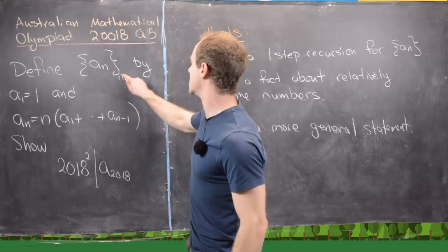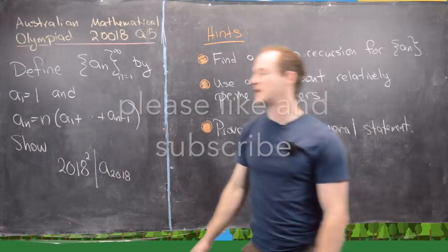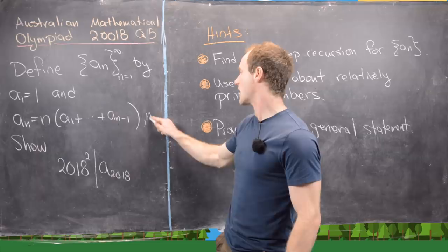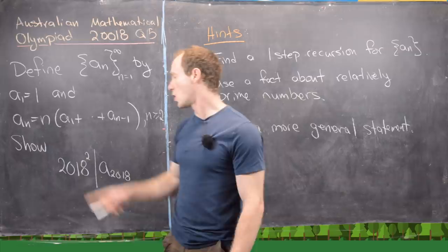So we want to define this sequence of numbers a_n and I should say this starts at n equals zero to infinity by this recursion. So we have a_1 equals one and then a_n equals n times the quantity a_1 plus a_2 plus a_3 all the way up to a_{n-1} and that is for all n bigger than or equal to two.